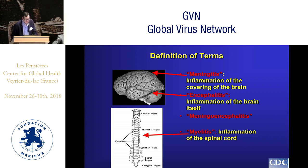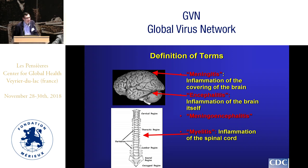Encephalitis refers to inflammation of the brain parenchyma itself, and people with encephalitis generally present with altered mental status, focal neurologic signs, and seizures. In some cases both the meninges and the brain parenchyma can become involved, and that's referred to as meningoencephalitis. Myelitis is inflammation of the spinal cord, basically resulting in acute flaccid limb weakness — you can conceptualize it as an encephalitis of the spinal cord.